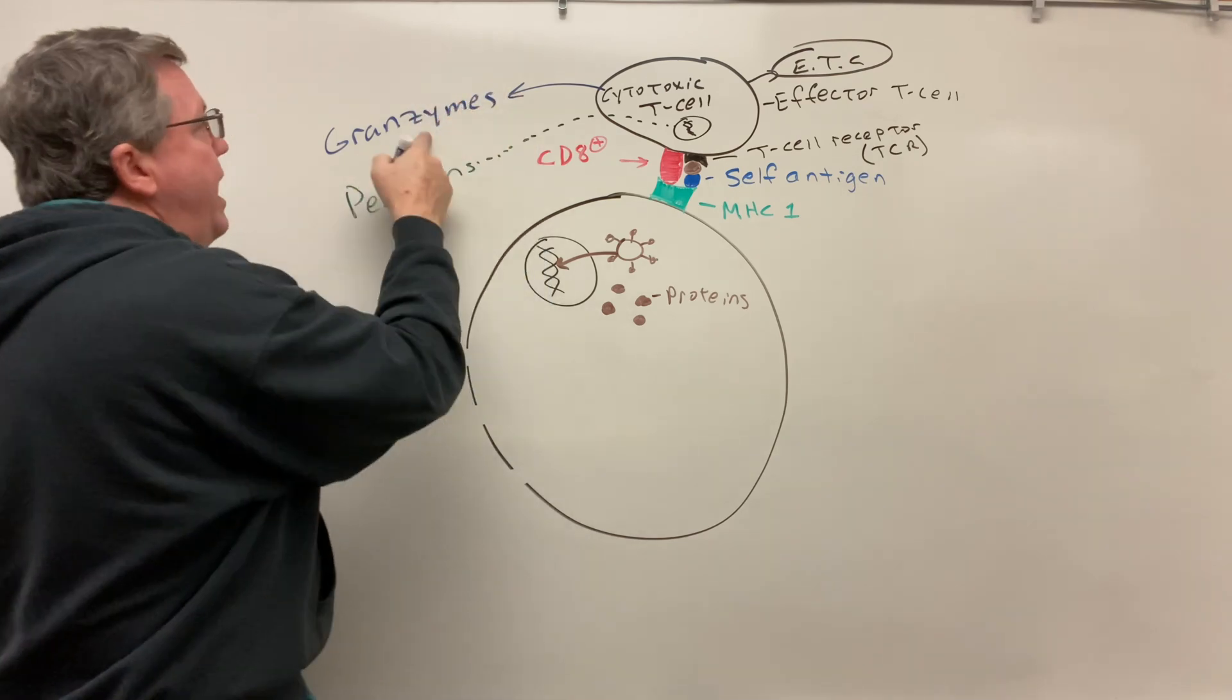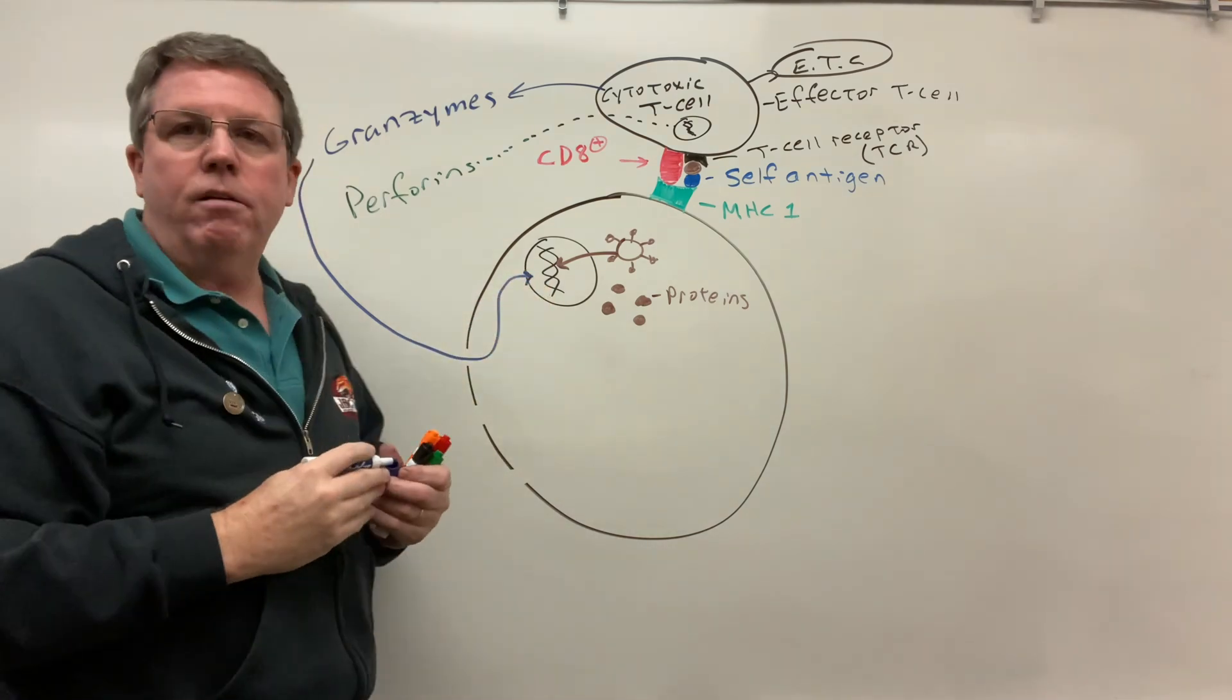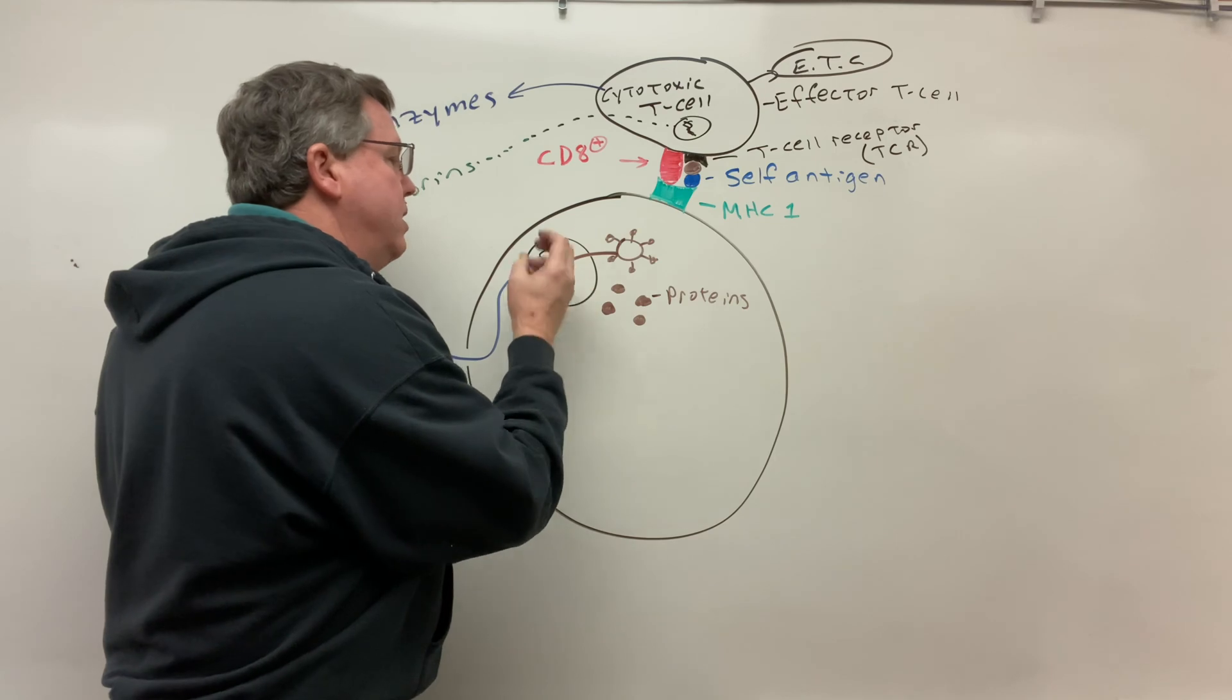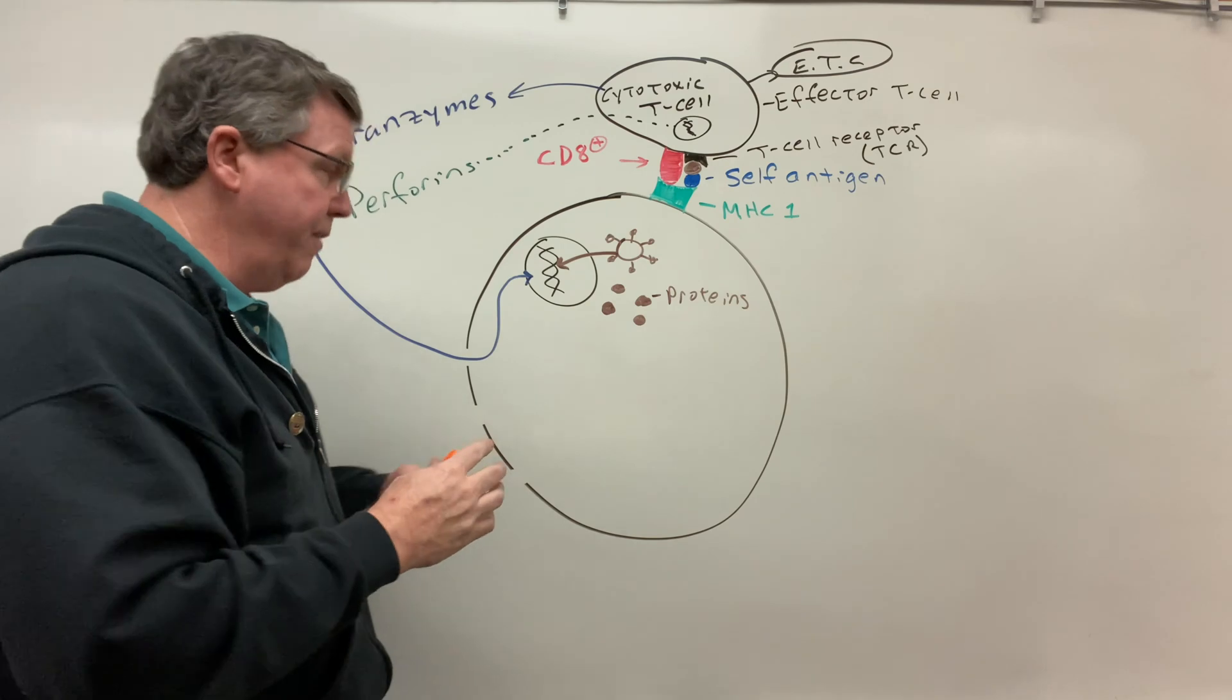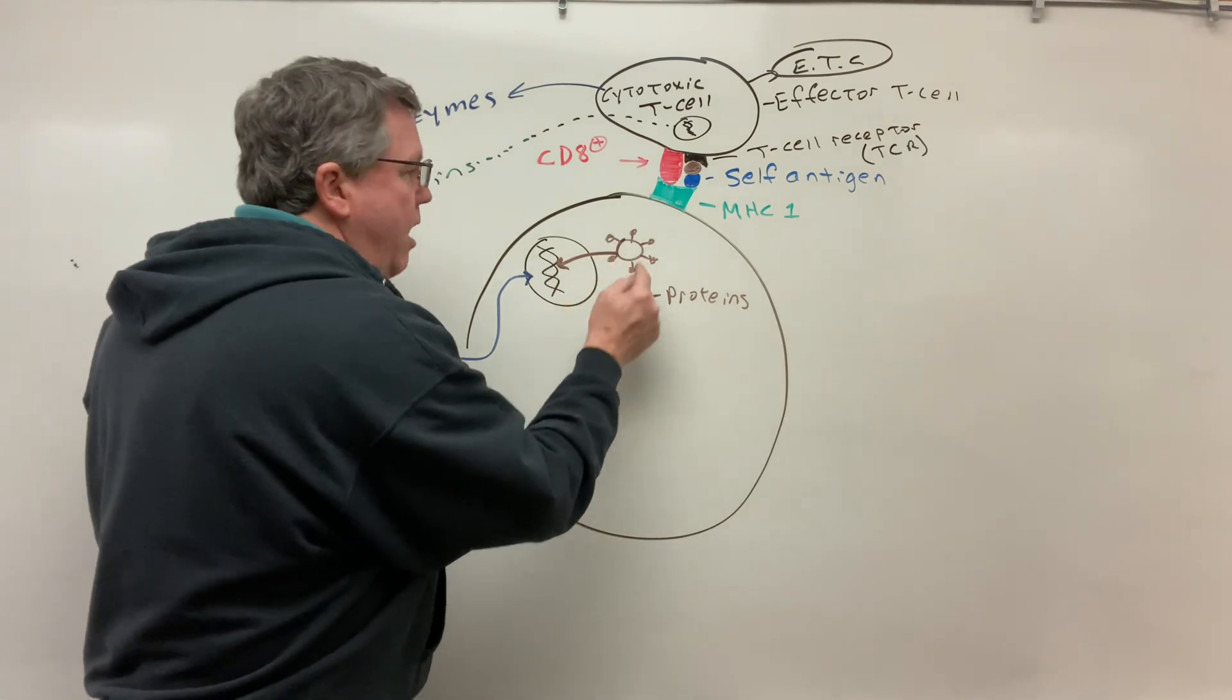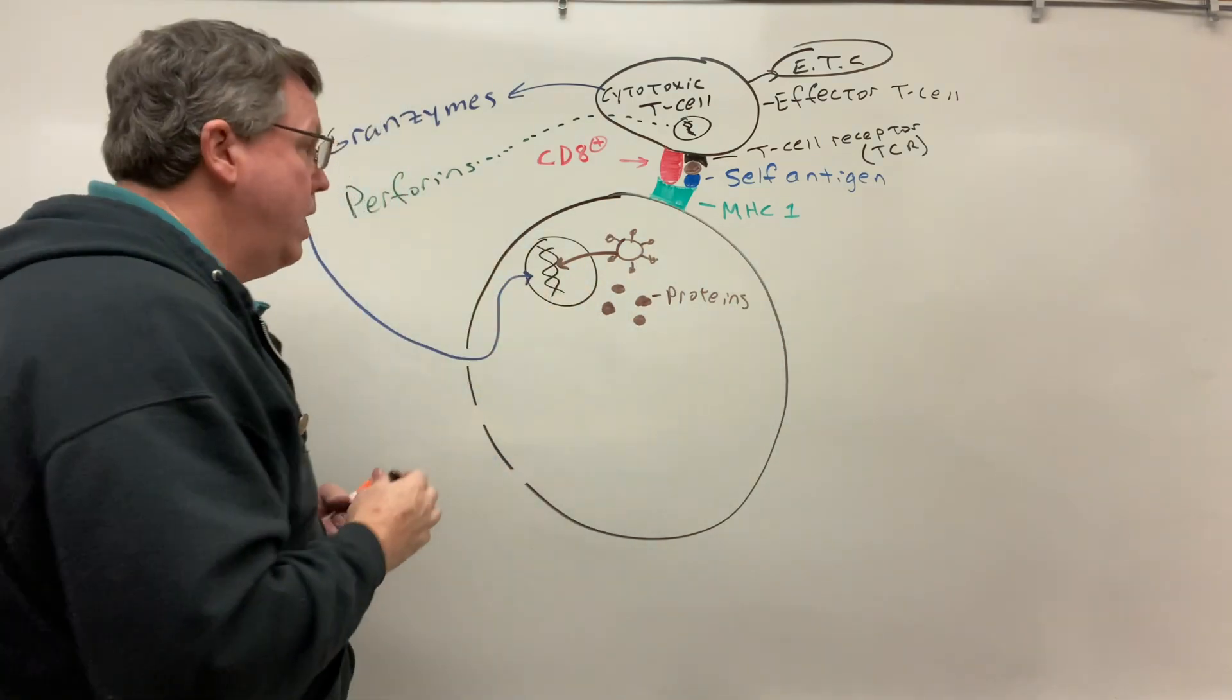Okay, and then what granzymes will do is they are going to go into these holes here and they will go up to the DNA and they are going to basically make the DNA start to produce proteins that will cause something called apoptosis. Apoptosis is programmed cell death. So basically what's going to happen now is the cell is going to basically do things so that it can kill itself. If it can kill itself now, my virus, my viral proteins or my virus or my cancer cells cannot now go on and produce.